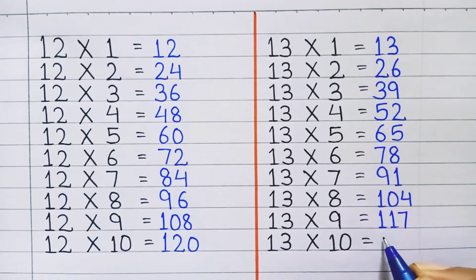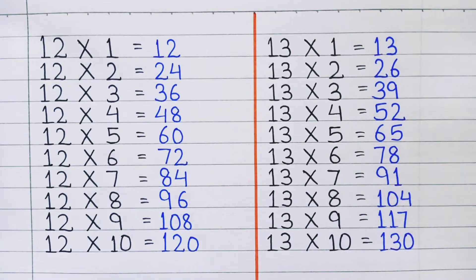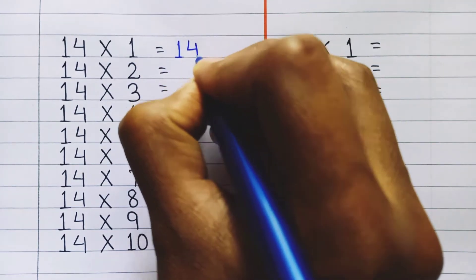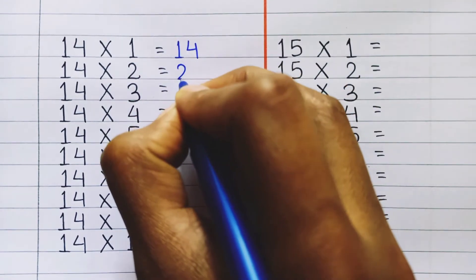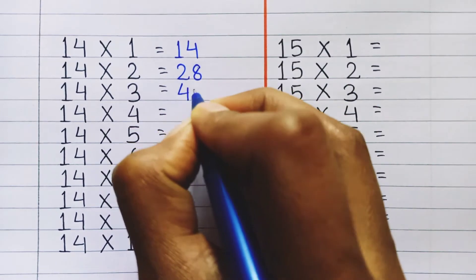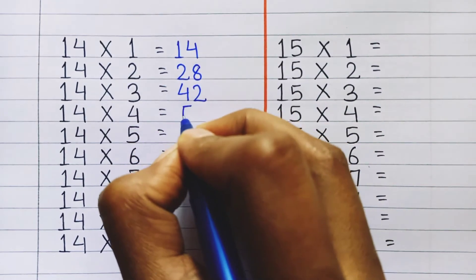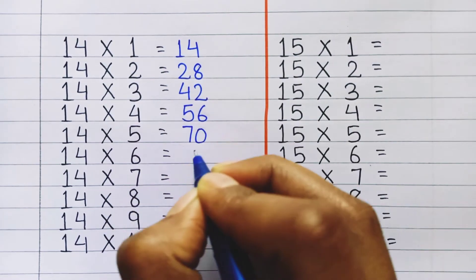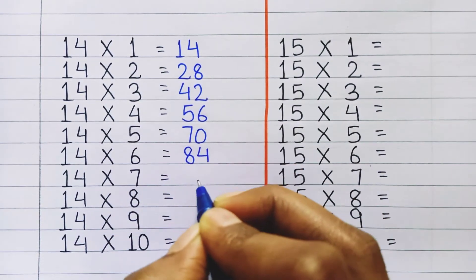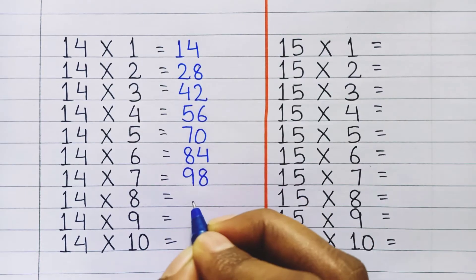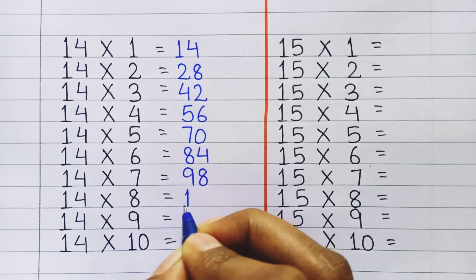13 ten's a 130. Table of 14: 14 one's a 14, 14 two's a 28, 14 three's a 42, 14 four's a 56, 14 five's a 70, 14 six's a 84, 14 seven's a 98.